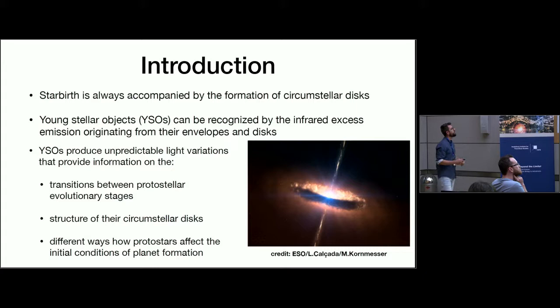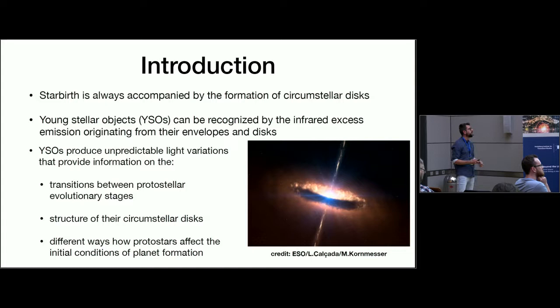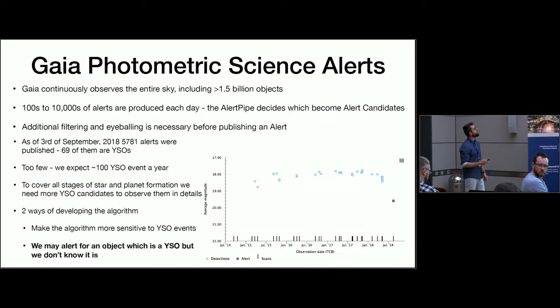YSOs are not stationary objects. There are many dynamical processes going on so they sometimes produce light variations and brightness variations which provide information on transitions between protostellar evolutionary stages, on structure of these disks, and different ways how the protostars affect the initial conditions of planet formation.